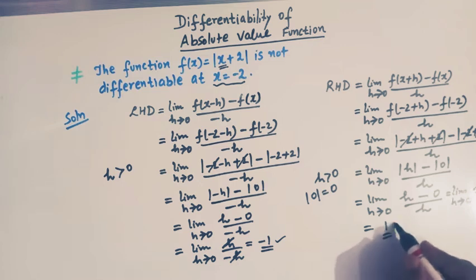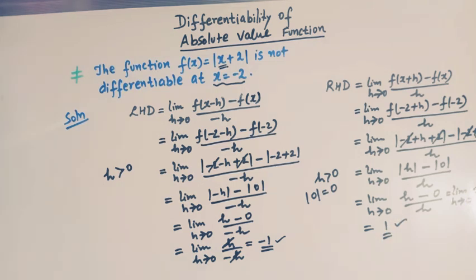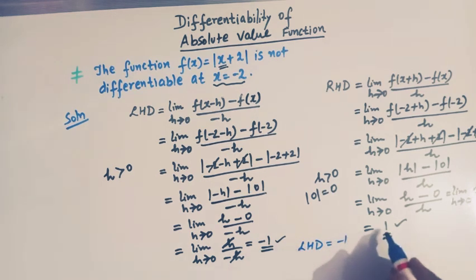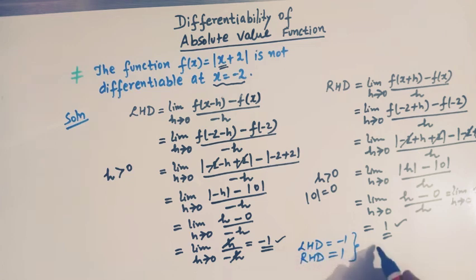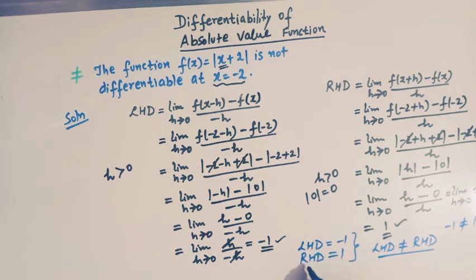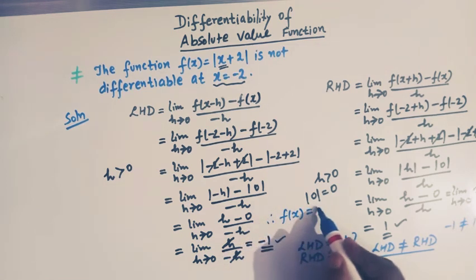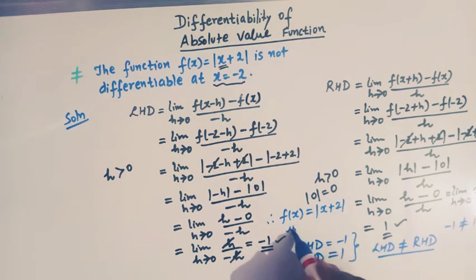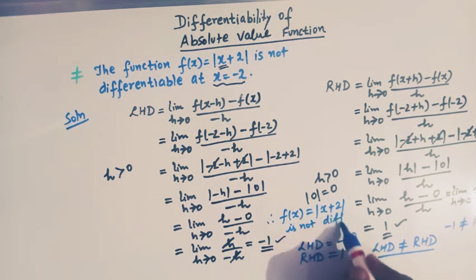We see that the left-hand derivative is -1 and the right-hand derivative is 1, and these two derivatives are not equal: -1 ≠ 1. Therefore we conclude that since the left-hand derivative is not equal to the right-hand derivative, the function f(x) = |x + 2| is not differentiable at x = -2.